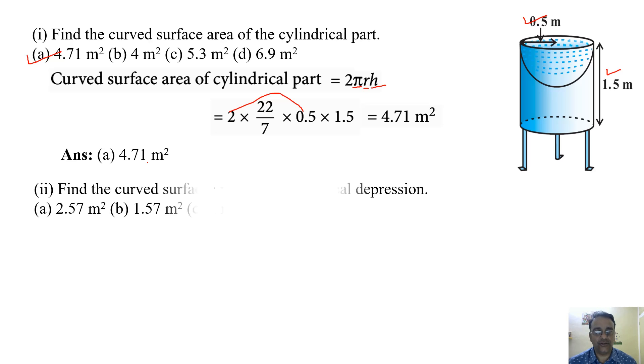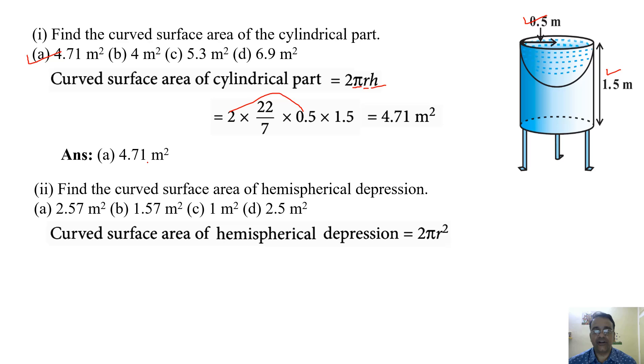Now we will move toward the second question. Find the curved surface area of hemispherical depression. So curved surface area of hemisphere, the formula is 2πr². π is 22 by 7 and the radius is already given 0.5.